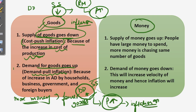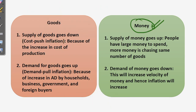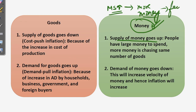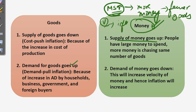Both cost-push inflation and demand-pull inflation cause inflation to rise. Now moving to the money factors: when the supply of money goes up, people have more money chasing fewer goods. People will spend more, circulation of money will be more, velocity of money will be more, and as a result inflation will rise.